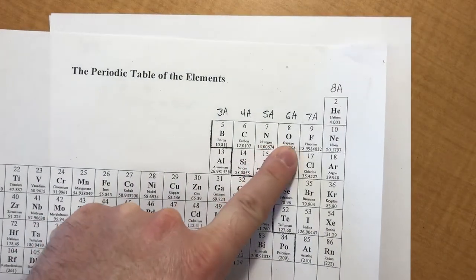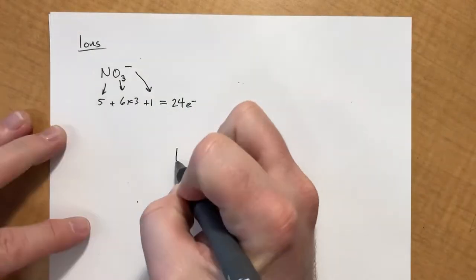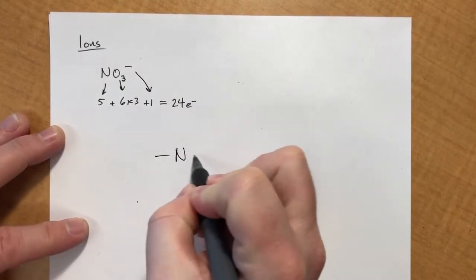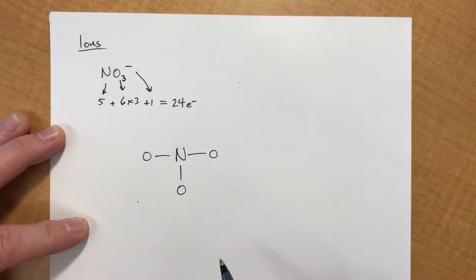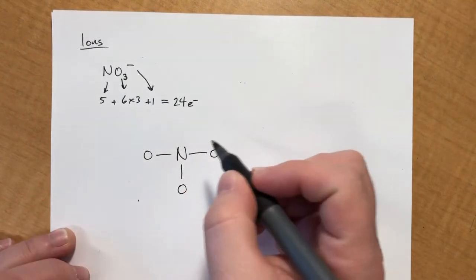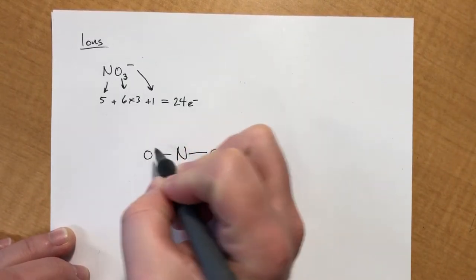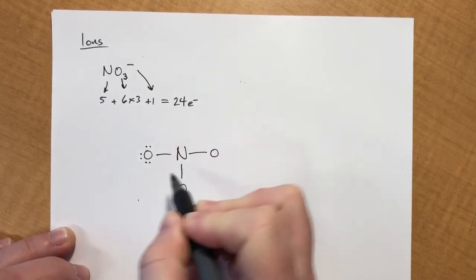So basically it comes out to 24. And then we just follow the rules like normal until the very end there's one extra thing we need to do. So between nitrogen and oxygen, nitrogen is further away from fluorine, so it's our central atom. We have three oxygens attached.